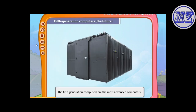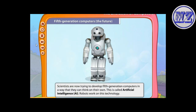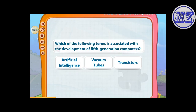Computers that are currently being researched and developed are the fifth generation computers. These are the most advanced computers. Scientists are now trying to develop fifth generation computers so that they can think on their own — this is called artificial intelligence. Robots work on this technology. That's right: scientists are trying to develop artificial intelligence with the fifth generation computers.